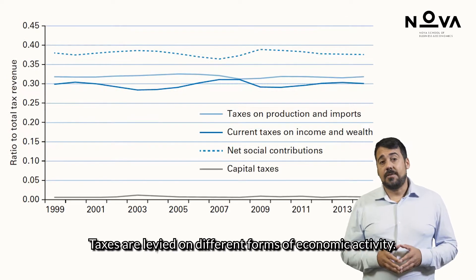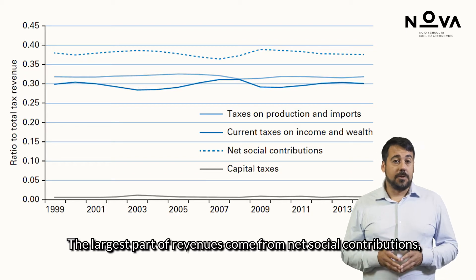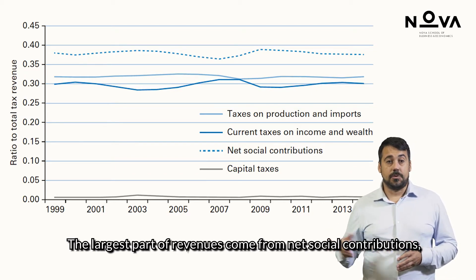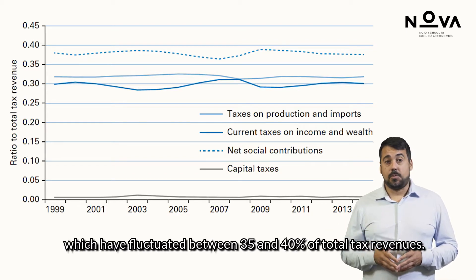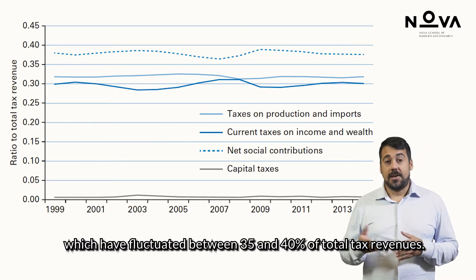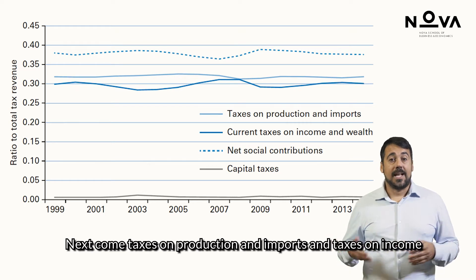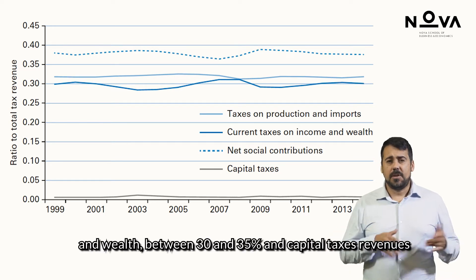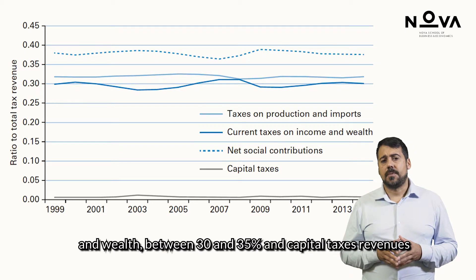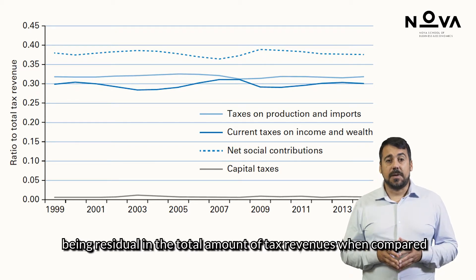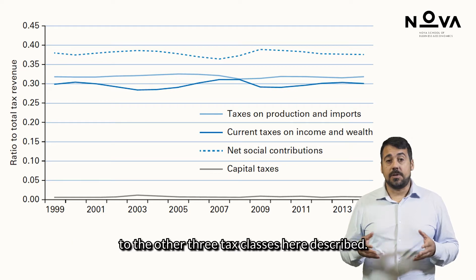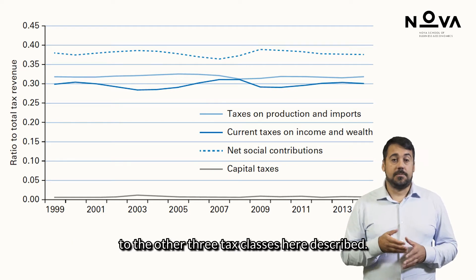Taxes are levied on different forms of economic activity. The largest part of revenues comes from net social contributions, which have fluctuated between 35 and 40% of total tax revenues. Next come taxes on production and imports and taxes on income and wealth, between 30 and 35%, with capital tax revenues being residual in total tax revenues when compared to the other three tax classes described.